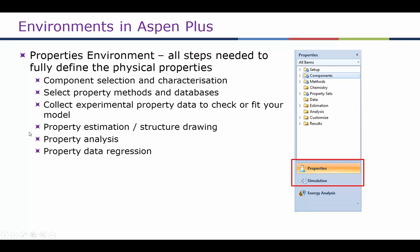We can also do property analysis — for example, generate vapor-liquid equilibrium data in Aspen Plus, and do property data regression, which means we can plot our model data against the experimental data for vapor-liquid equilibrium and see whether our property method is suitable for the given system.